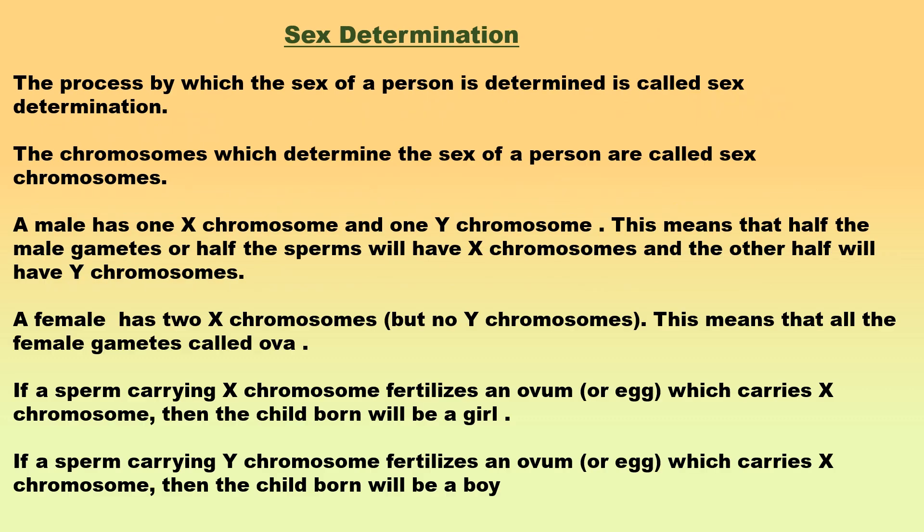Sex Determination: A person can have a male sex or a female sex. The process by which the sex of a person is determined is called sex determination. Genetics is involved in the determination of the sex of a person. The chromosomes which determine the sex of a person are called sex chromosomes. There are two types of sex chromosomes: one is called the X chromosome and the other is called the Y chromosome. A male — man or father — has one X chromosome and one Y chromosome. This means that half the male gametes or sperms will have X chromosomes and the other half will have Y chromosomes.